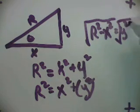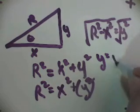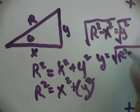If I take the square root of Y squared, it's simply Y. So Y would be equal to the square root of R squared minus X squared.